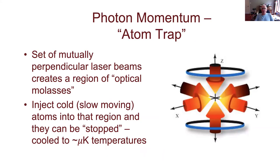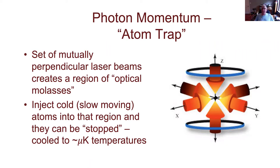The first application is a laboratory one — what's known as an atom trap, sometimes referred to as optical molasses. What happens here: we experimentally take a set of x, y, z axes and use clever optics to get laser beams coming in from both the plus and minus directions along the x-axis, y-axis, and z-axis. There's a volume in the center where all those laser beams intersect.